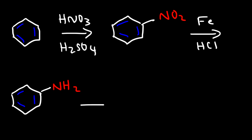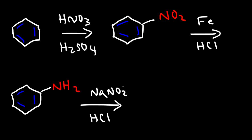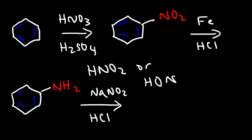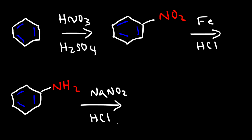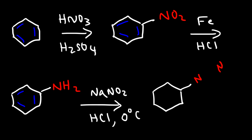The final step is to react this with sodium nitrite and hydrochloric acid. Combining the nitrite and the hydrogen, they make nitrous acid — sometimes written as HONO. This reaction is carried out at low temperatures. The result is an arene diazonium salt: we have a triple bond between the two nitrogen atoms, the nitrogen has a positive charge, and it pairs up with the chloride ion.